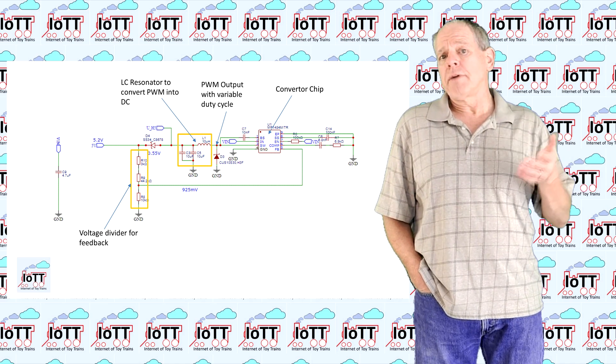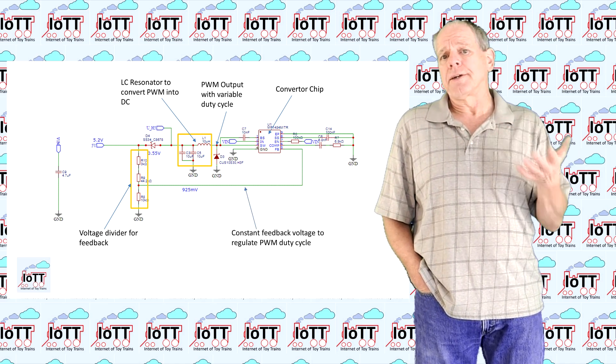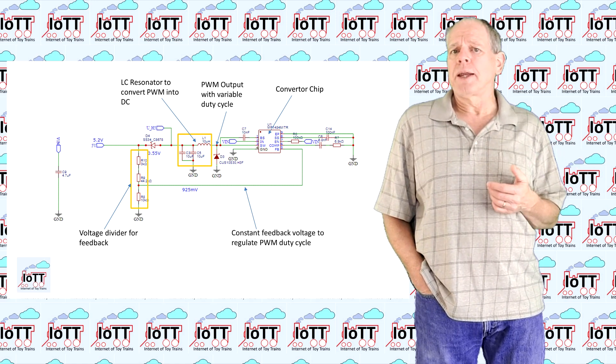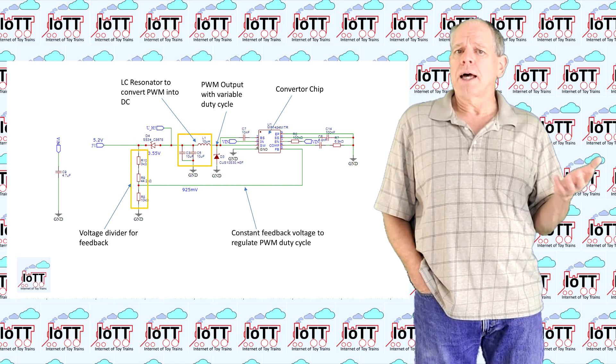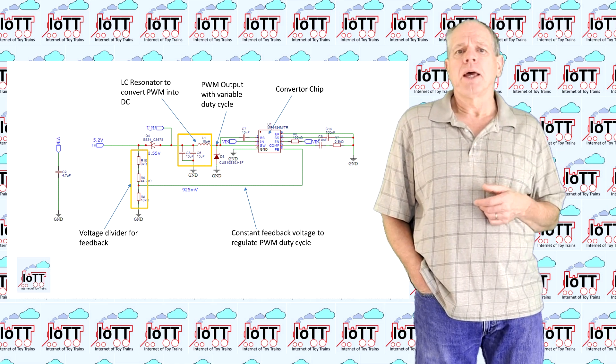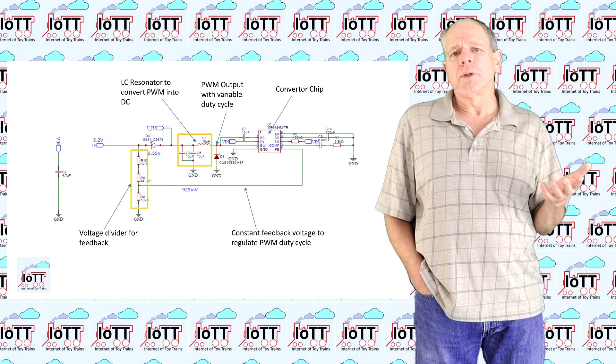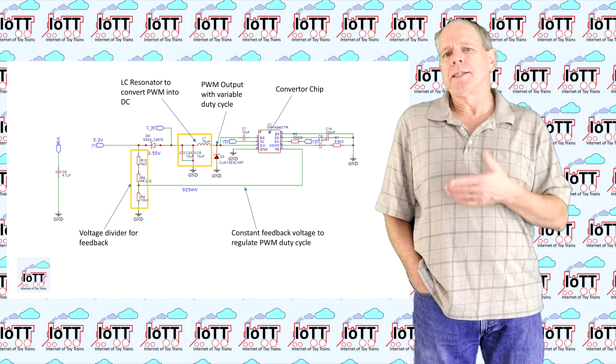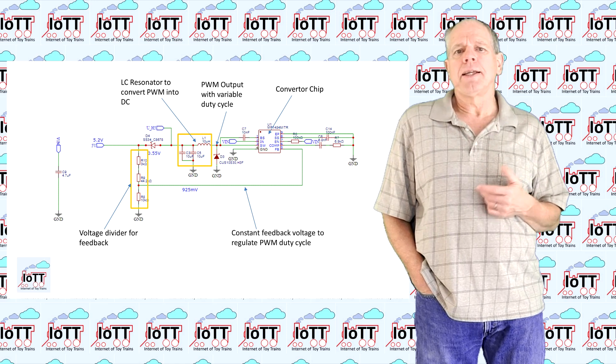In the case of the MP1484, this voltage is kept at 0.925V. If it sinks below that value, the duty cycle is increased to bring it back up. And if it is higher than 0.925V, the duty cycle is reduced to make it come down. As a result, the output voltage can be set by the voltage divider formed by the resistors R8, R9 and R10 in the system.